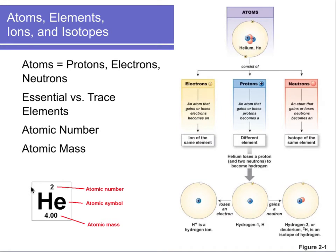On the periodic table, each box has an atomic symbol. The number on top is your atomic number, which is unique for each element and tells you the number of protons. The number on the bottom is the atomic mass, which tells you how much it weighs. Protons and neutrons both weigh one atomic mass unit or one Dalton. For helium, with an atomic number of two and an atomic mass of four, that means two protons and two neutrons, and since atoms are neutral, helium also has two electrons.